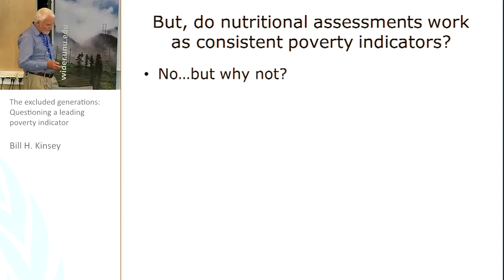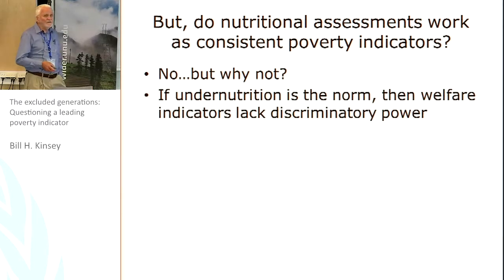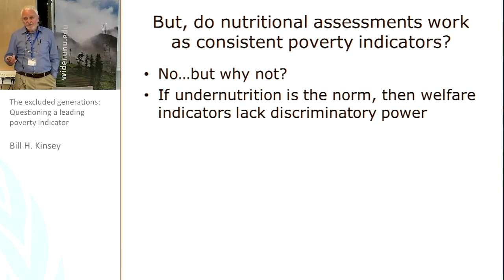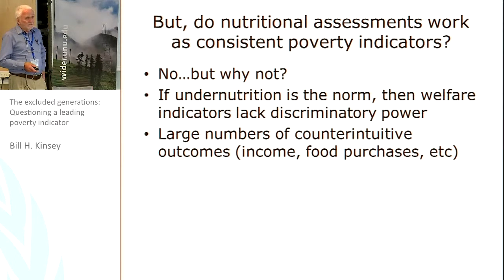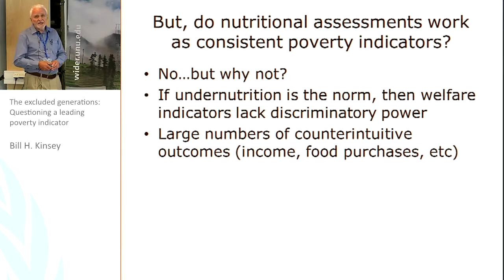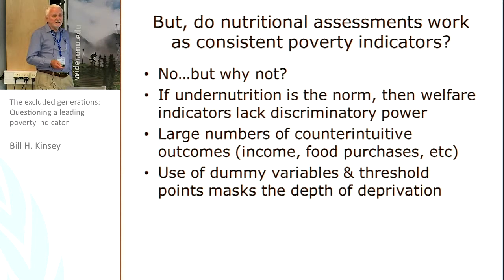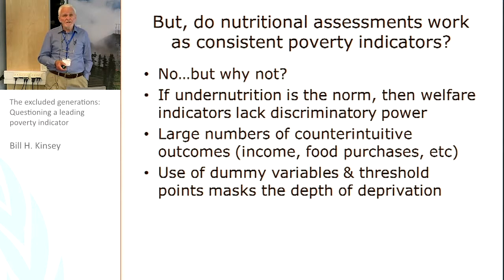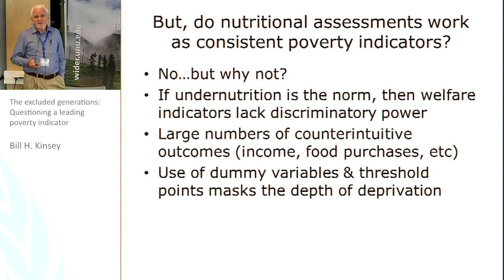The nutritional assessments, I suggest, aren't particularly helpful. One reason is if you've got 60% of children who are undernourished, that is the norm. So the other welfare indicators you might look at don't tell you very much. I've referred already to the contradictory outcomes — income, food production, food purchases — none of these fits very well with patterns of undernutrition. Part of this may relate to looking simply at presence or absence of undernutrition using dummies. It may be that it's the depth of deprivation that's more important than the presence or absence, and I can't answer that question at the moment.